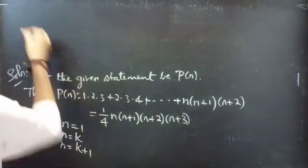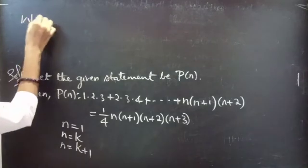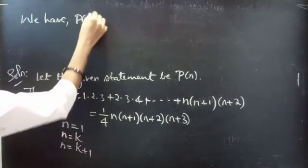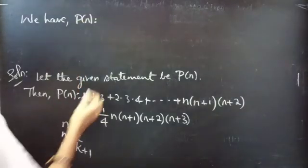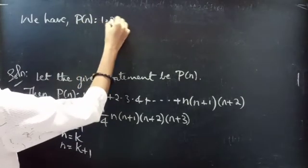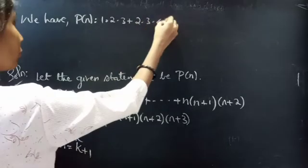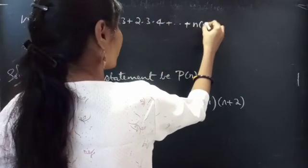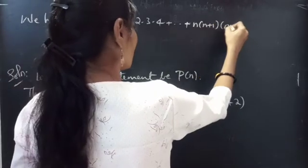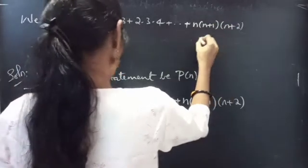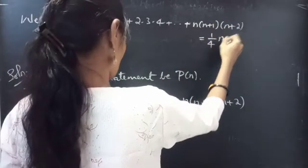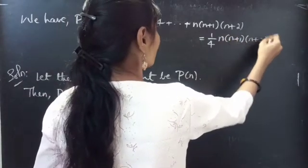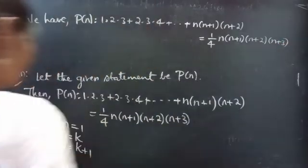We have P(n) such that 1·2·3 + 2·3·4 + ... + n(n+1)(n+2) equals (1/4)·n(n+1)(n+2)(n+3).